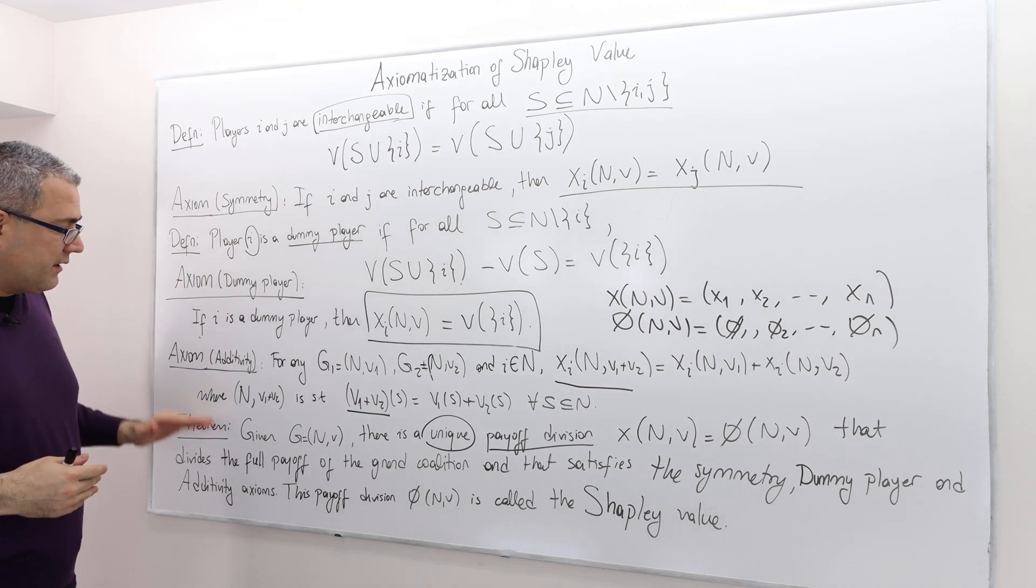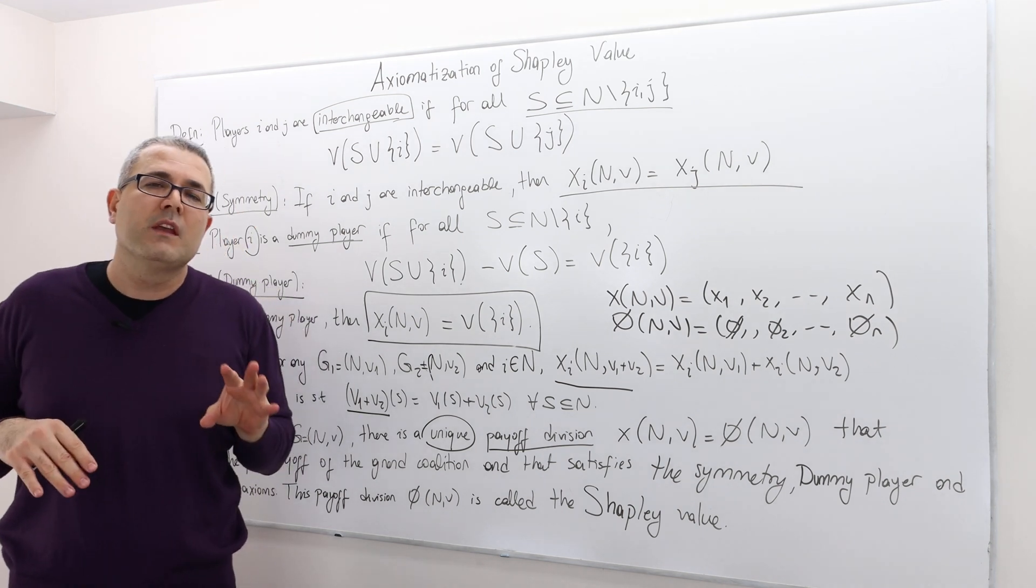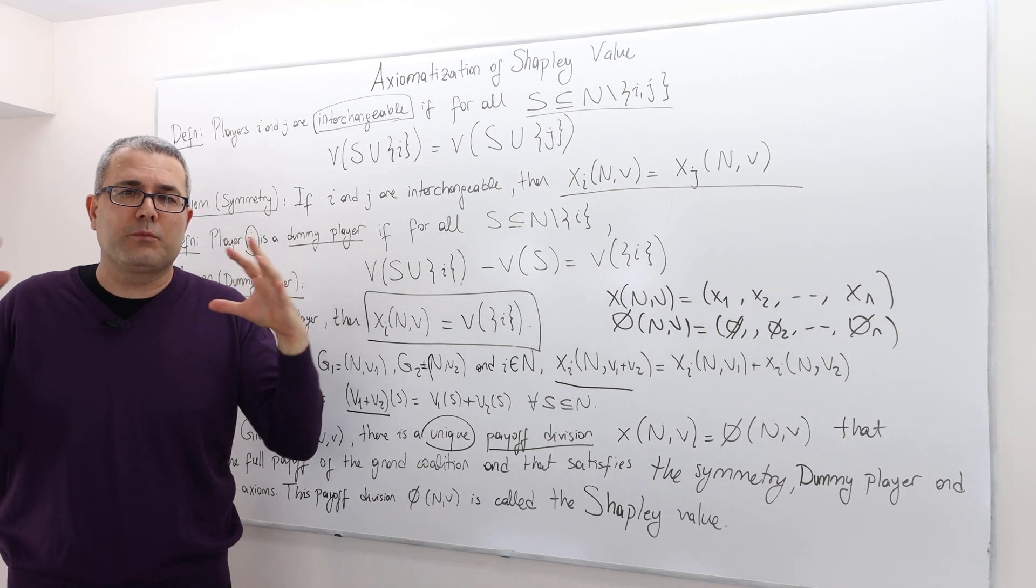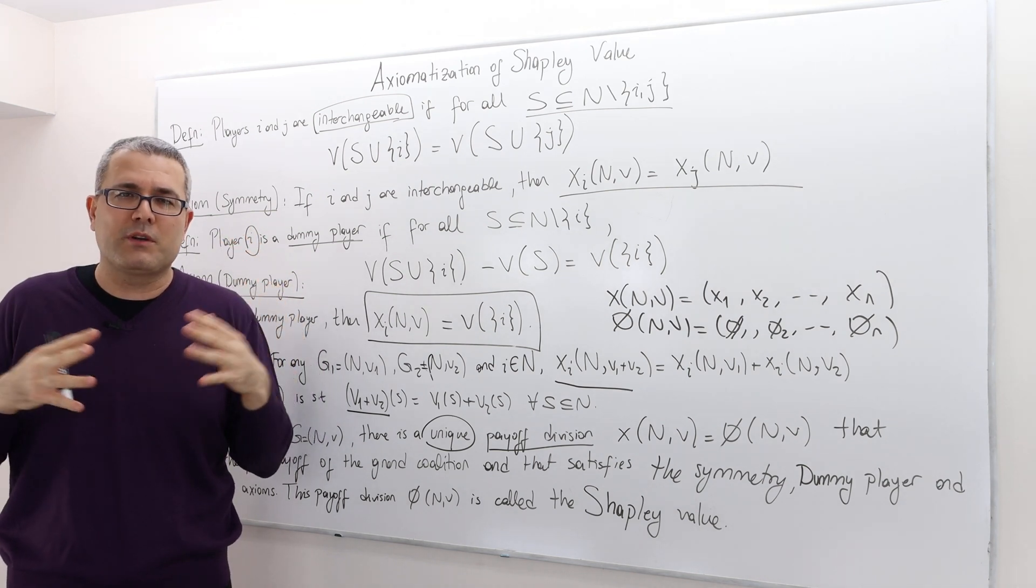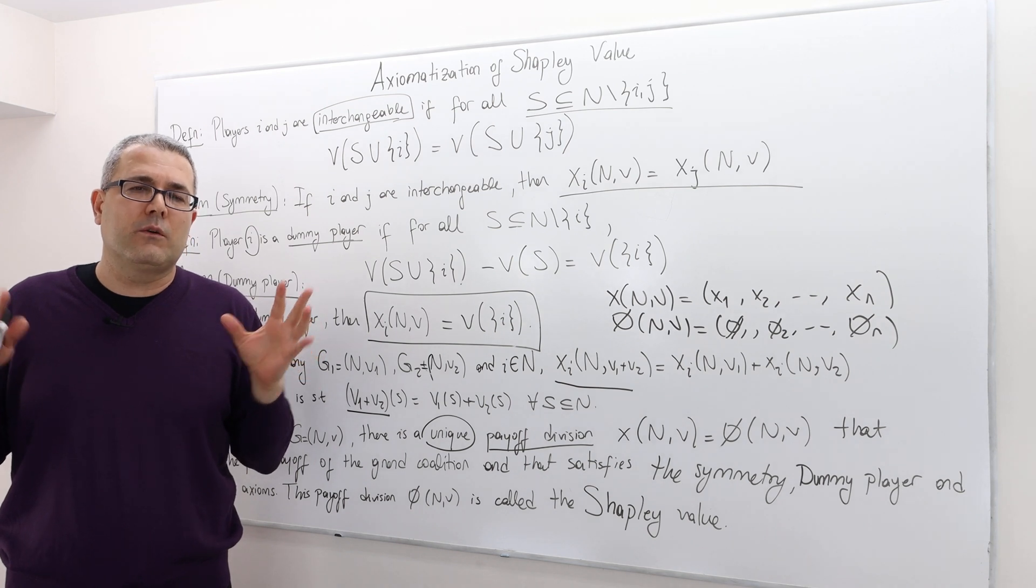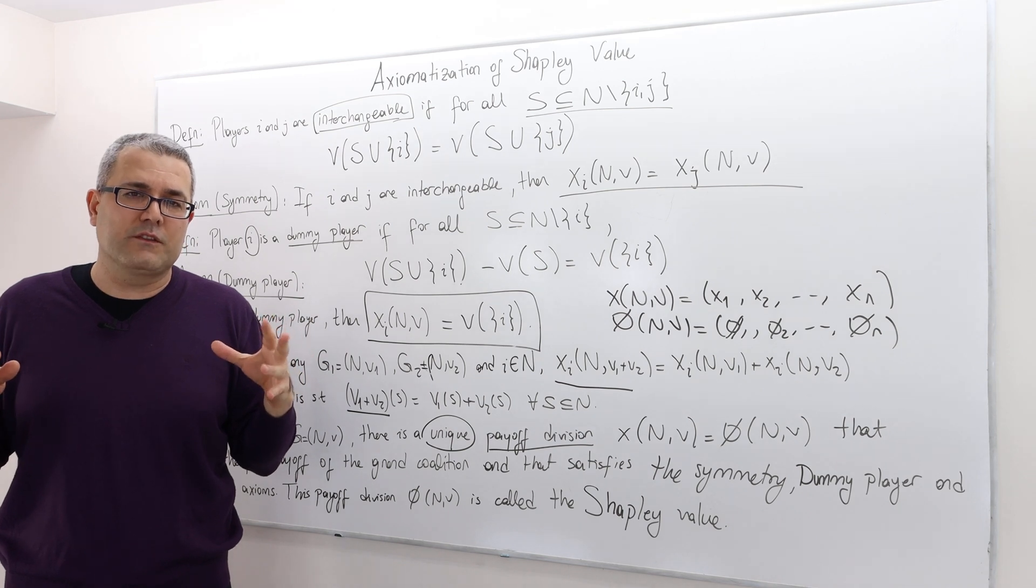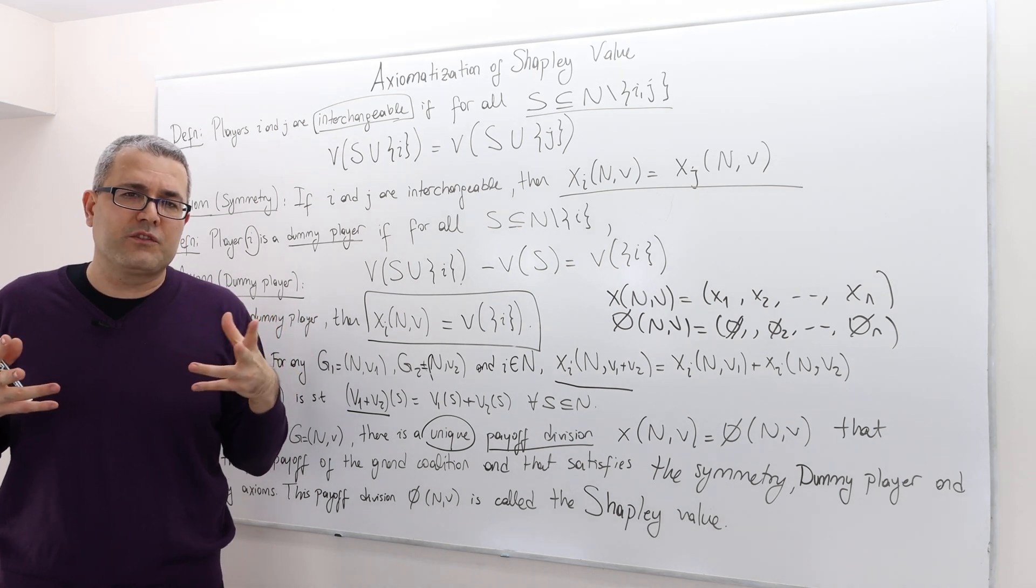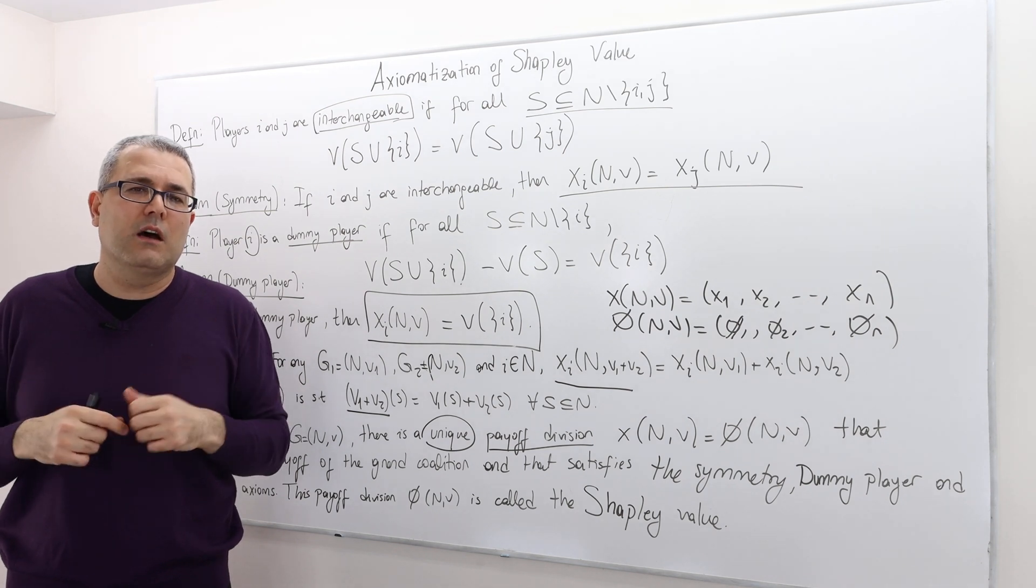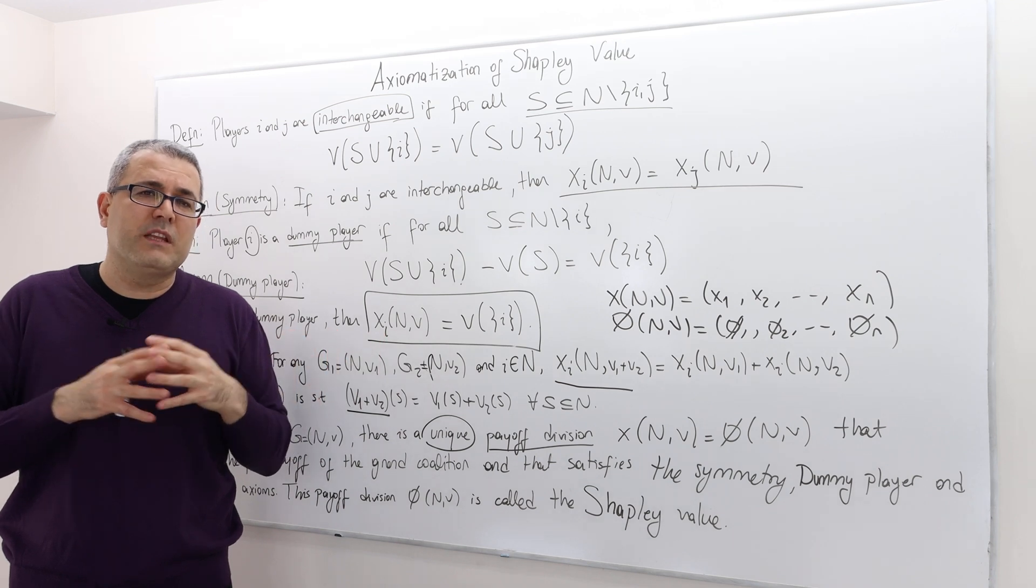All right. So what is the theorem? The theorem says the following, intuitively, if you're looking for some division rule, how to divide the surplus of the grand coalition, because remember, we're looking for super additive games. And so the grand coalition will be formed. That's the optimal thing to do. And then the question was how to divide the worth of the grand coalition.